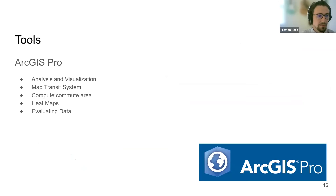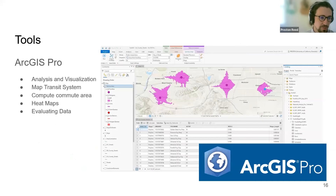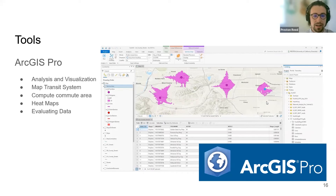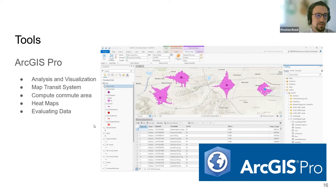The tool we used was ArcGIS Pro, which allows us to analyze, visualize, and work with data in table format. As an example, I have a screenshot of four bus stops mapped in ArcGIS Pro — the pink area surrounding each stop is the walking radius, showing how far you can walk within 15 minutes of any bus stop. That's just an example of what ArcGIS Pro can do, and this is what we used for our analysis.